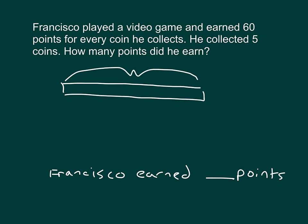So we have this here where he earns 60 points for every coin he collects, and we know that he collected 5 coins. So let's draw a tape diagram. And the tape diagram, the whole tape diagram, is going to represent what we're solving for or the number of points that Francisco earns.